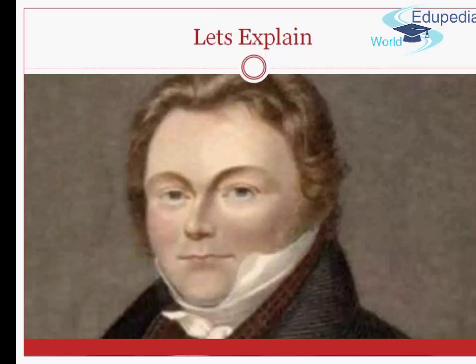Then, John Dalton, the great scientist, used some other types of symbols to represent the elements. He used circle for the oxygen atom, he used circle with a dot for the hydrogen and many more.